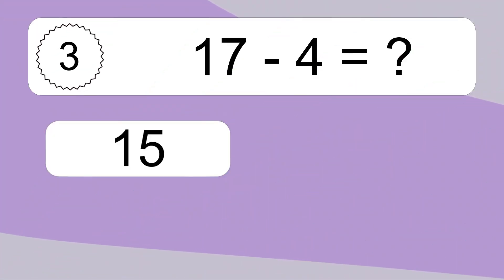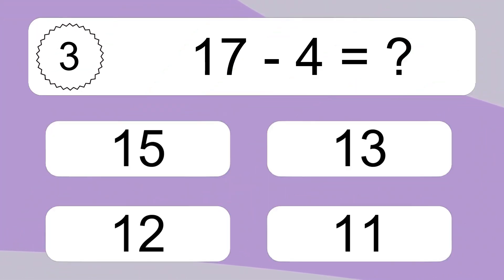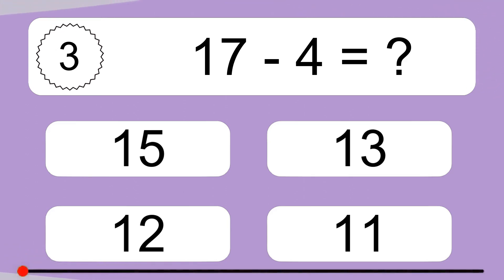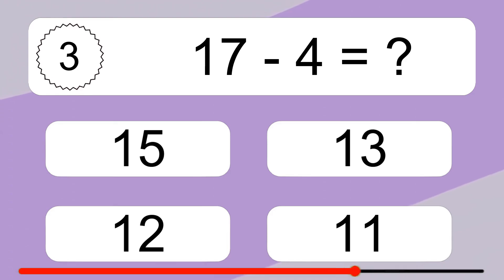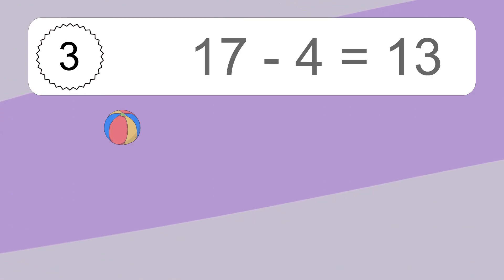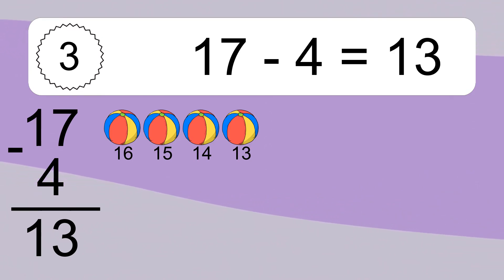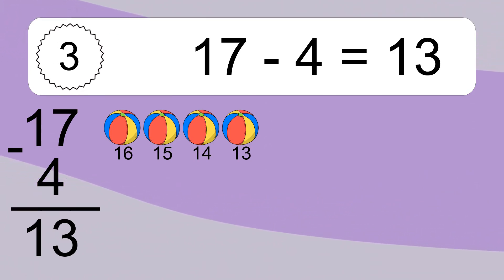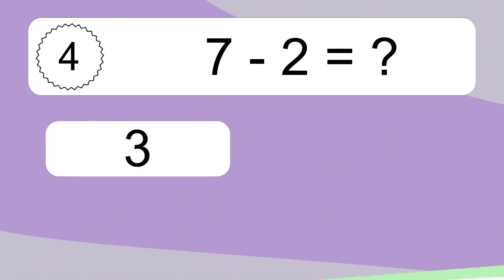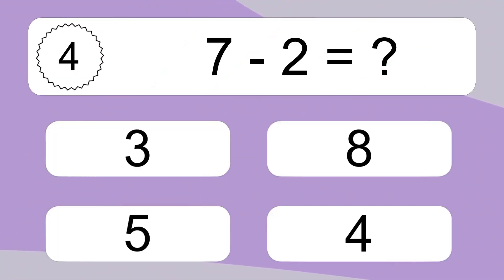17 minus 4 equals what? 17 minus 4 equals 13. Let's count it: 16, 15, 14, 13.